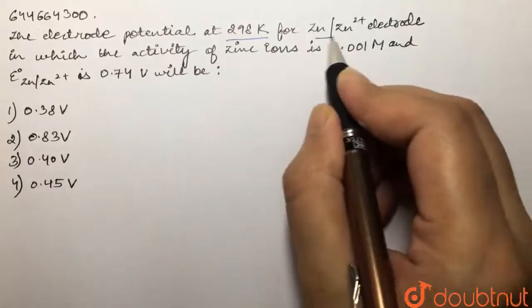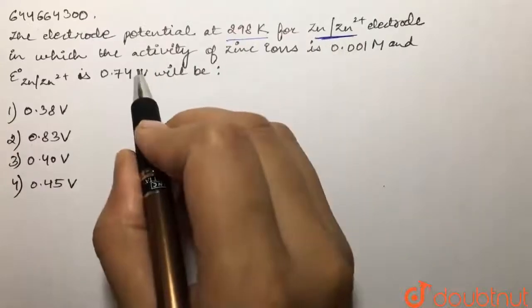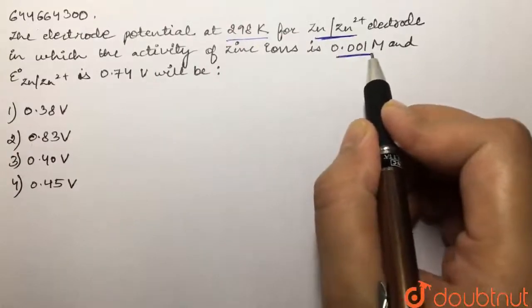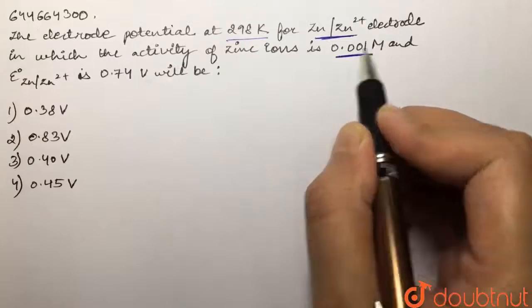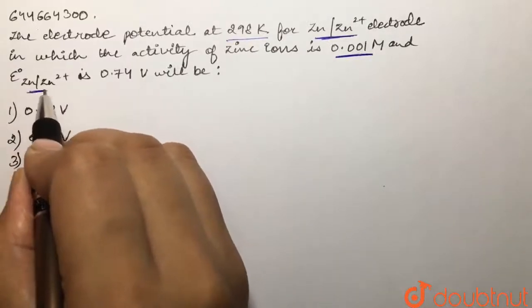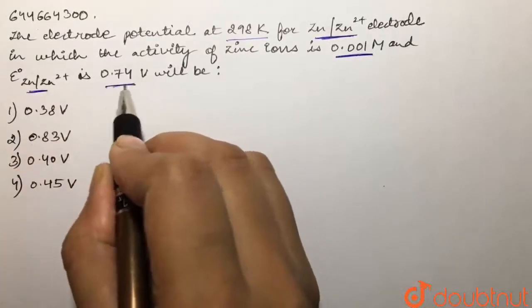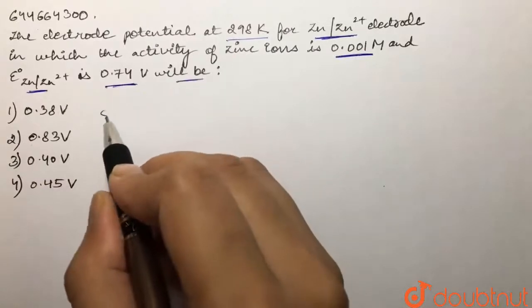Our question is: the electrode potential at 298 Kelvin for zinc to zinc two plus electrode in which the activity of zinc ions is 0.001 molar and E naught for zinc to zinc two plus is 0.74 volt will be what?